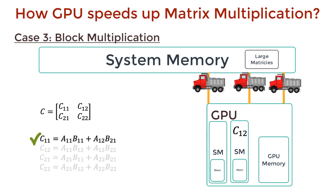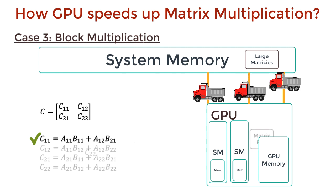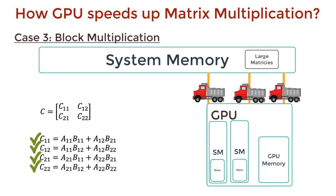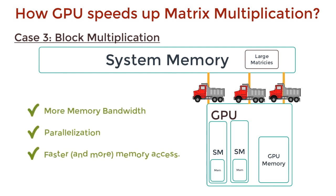While one SM computes submatrix block C11, in parallel the other SMs compute different blocks in the final matrix. This is much faster since we're using the memory within a streamlined multiprocessor. We can make use of more memory bandwidth to fetch the blocks of data either into the GPU or into the streamlined processor memory, and lots of parallelization is happening both in fetching data from system memory and in parallel processing with the streamlined multiprocessors.